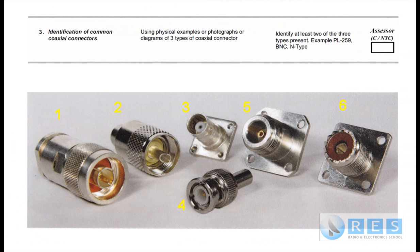Competency number three is the identification of coaxial connectors. The assessor may give you actual coaxial connectors of this type, or show you a diagram similar to this. He's not interested in you telling him that this is PL259 or whatever — he just wants the common names for these six connectors.